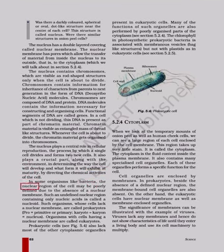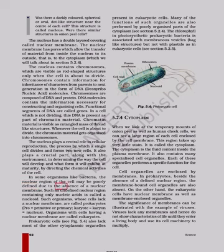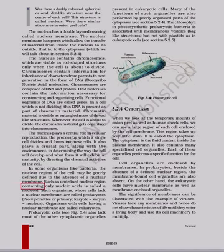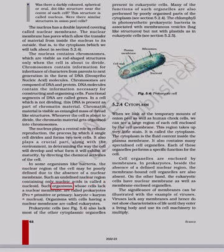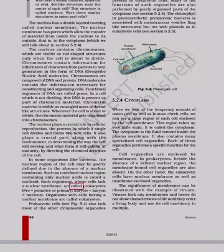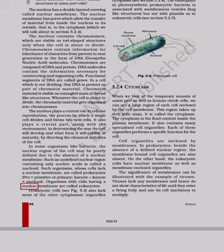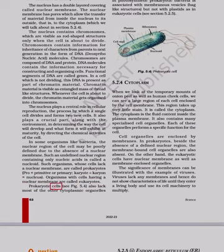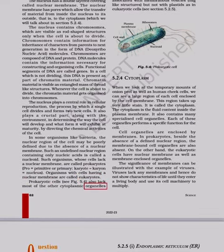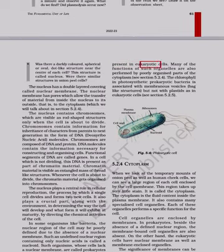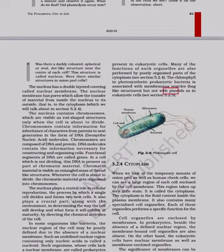In some organisms like bacteria, the nuclear region of the cell may be poorly defined due to the absence of a nuclear membrane. Such an undefined nuclear region containing only nucleic acids is called a nucleoid. Such organisms, whose cells lack a nuclear membrane, are called prokaryotes — pro meaning primitive or primary, karyote from karyon meaning nucleus. Organisms with cells having a nuclear membrane are called eukaryotes. Prokaryotic cells also lack most of the other cytoplasmic organelles present in eukaryotic cells. The chlorophyll in photosynthetic prokaryotic bacteria is associated with membranous vesicles — bag-like structures — but not with plastids as in eukaryotic cells.